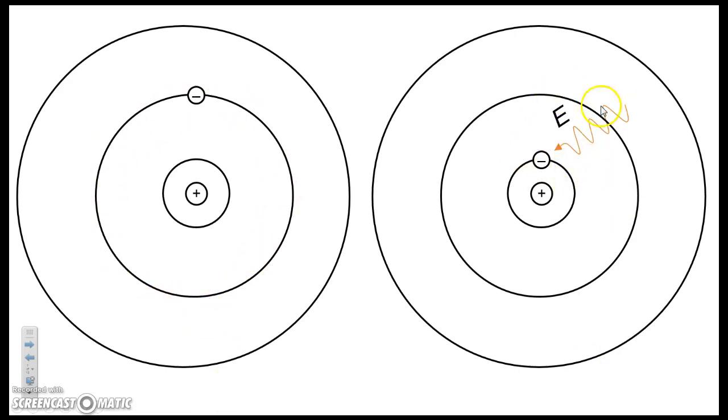And so you might think the same thing happens over here with the orange photon, except this orange photon has more energy. So if the electron absorbed it, it would jump to the forbidden space. And that cannot happen. So instead, the orange photon just passes on by, and it doesn't get absorbed.